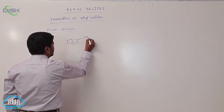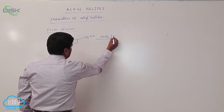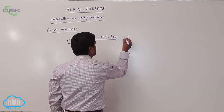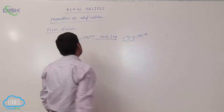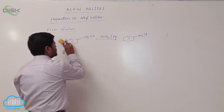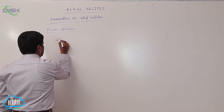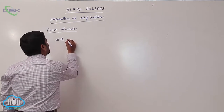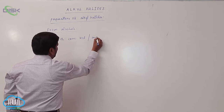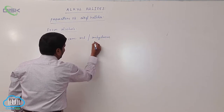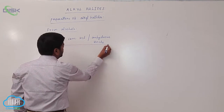Benzyl alcohol reacts with SOCl₂ in the presence of pyridine as a base to form benzyl chloride. Next, with concentrated hydrochloric acid and anhydrous zinc chloride — anhydrous ZnCl₂ is the fourth reagent.